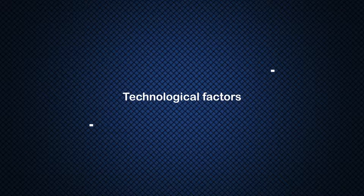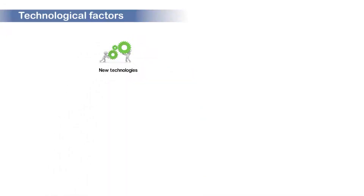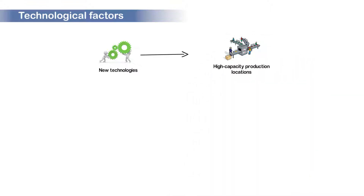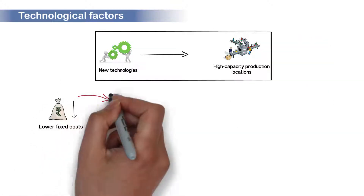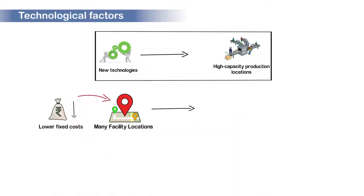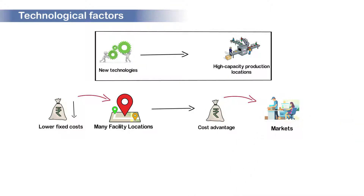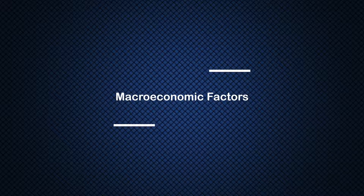Next, we look at the technological factors. New technologies have been emerging, which has resulted in a few high-capacity production locations with economies of scale. If these facilities have lower fixed costs, then many facilities like the one planned and established to get the cost advantage to serve the market are done. But if the fixed cost of setting up these facilities is high, it is advisable to set up few facility locations which may serve the market.